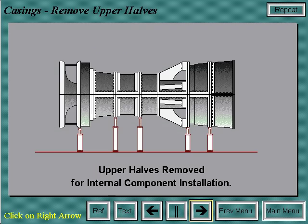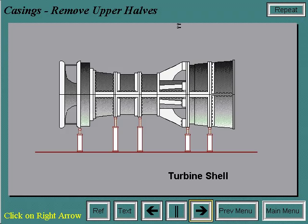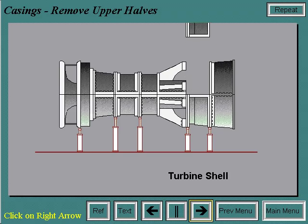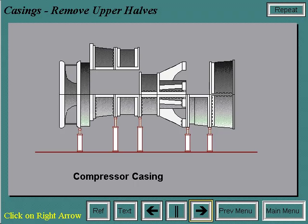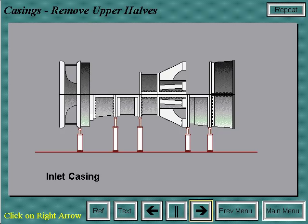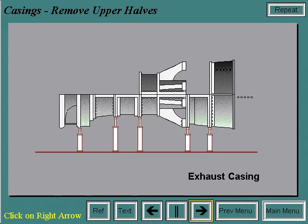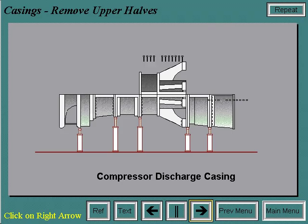The upper halves of the casings are removed to allow for internal component installation. All vertical and horizontal bolts are removed and the casings are lifted off one at a time in the following sequence: first the turbine shell, then the compressor casing, then the inlet casing, then the exhaust casing, and finally the compressor discharge casing.